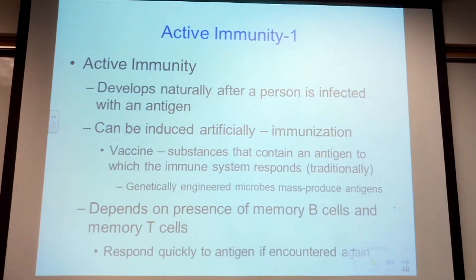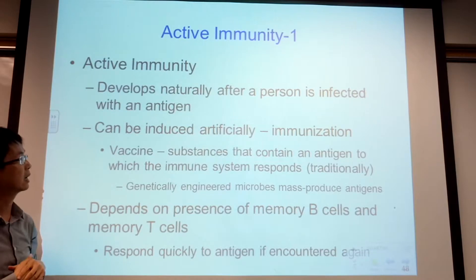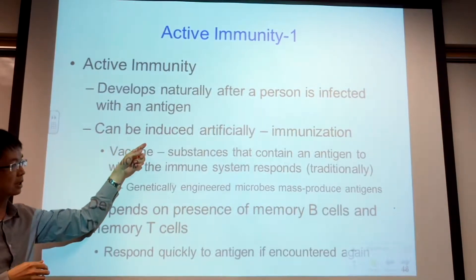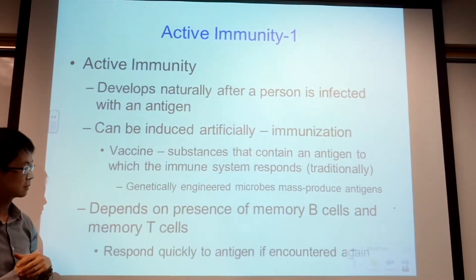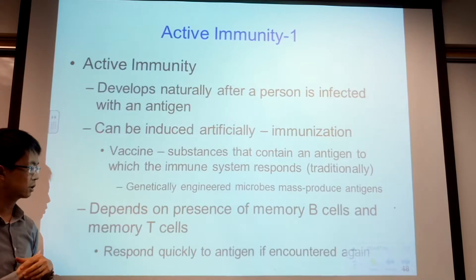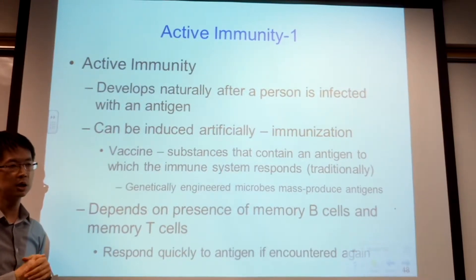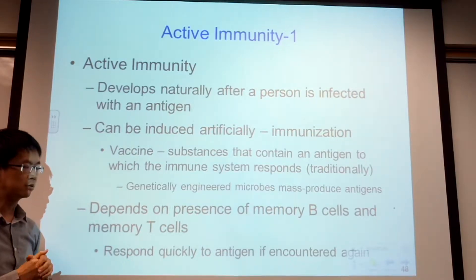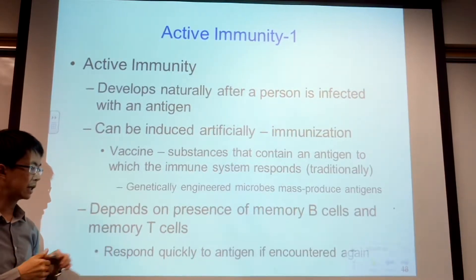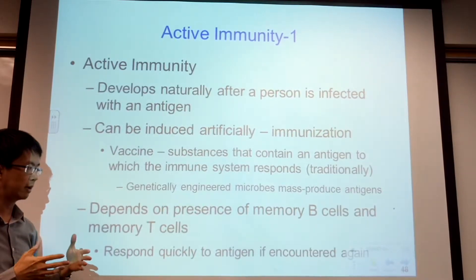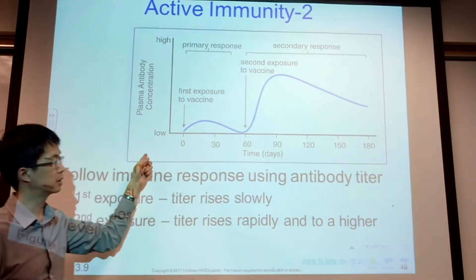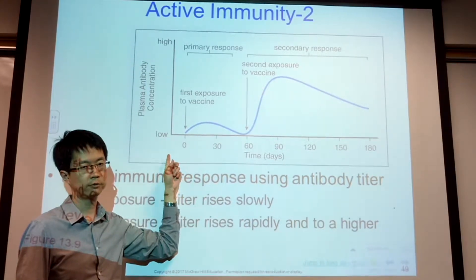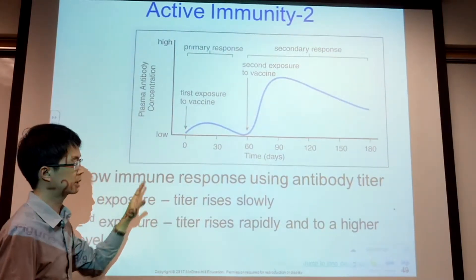With active immunity, the person is infected by an antigen, but it can also be induced artificially by immunization — that's why we get vaccines. Vaccines are genetically engineered microbes or mass-produced antigens that are safe and won't cause non-specific immune responses, but they will allow B-cells and T-cells to form memory cells.